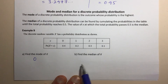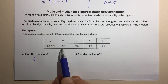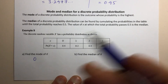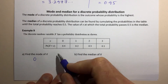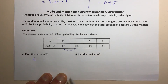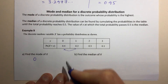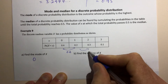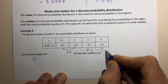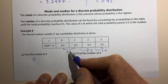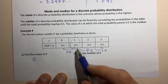Find the median of X. We start from the beginning and add the probabilities together until we get beyond 0.5. Adding the 0.4 and the 0.2 gives a total of 0.6. The key point is to work out where it ticks over 0.5, and clearly that happened in the interval where X equals 1.